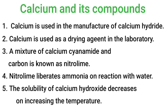Number 1: Calcium is used in the manufacture of calcium hydride, CaH2. Number 2: Calcium metal is used as a drying agent in the laboratory. Number 3: A mixture of calcium cyanamide and carbon is known as nitro-lime.